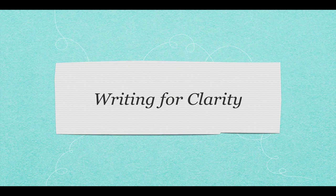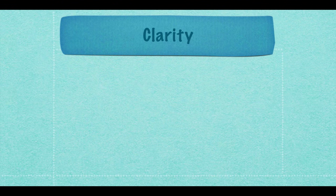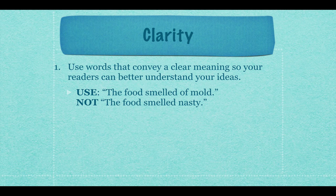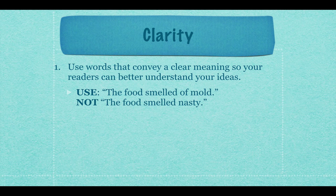Now that you understand the principles of formal academic writing, let's address writing for clarity. You have to get your ideas across in a way the reader can understand, using words that convey a clear meaning so readers can better grasp your ideas. For example, use 'the food smelled of mold' — we all know what that smells like — but you can't just say 'the food smelled nasty,' because what you think is nasty might differ from what someone else thinks. There's a cultural distinction, and 'nasty' isn't a good descriptor.